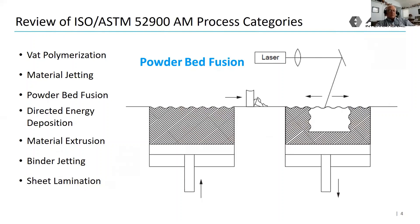All seven categories are covered in detail in the chapter. Some may not sound familiar, but you may have familiarity with vat polymerization — the most popular of those is stereolithography. Powder bed fusion includes laser sintering or laser melting. I show here a graphic of powder bed fusion as an example: a laser scans a build area, a feed cylinder on the left provides powdered feedstock, a moving slider bar slides the powder over to the build cylinder, and the part is created layer upon layer in this fashion.